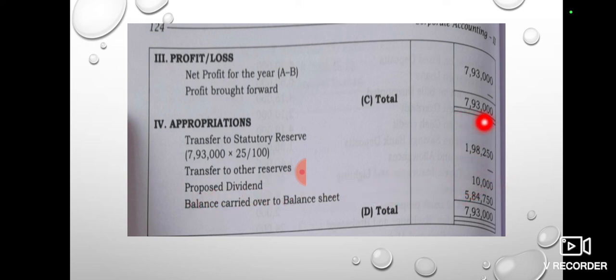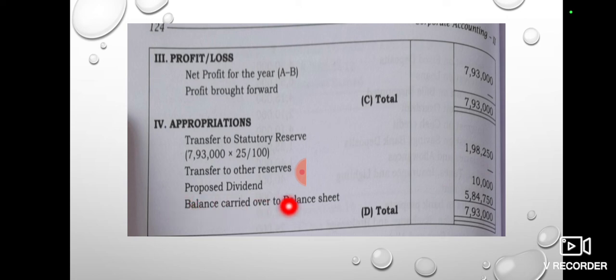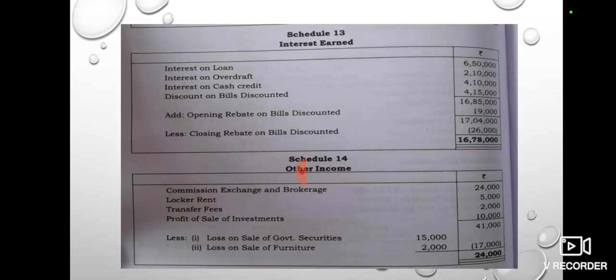The balance carried forward is $1,951,000, which represents the final figure in the Profit and Loss Account.